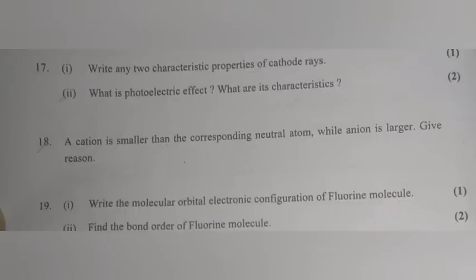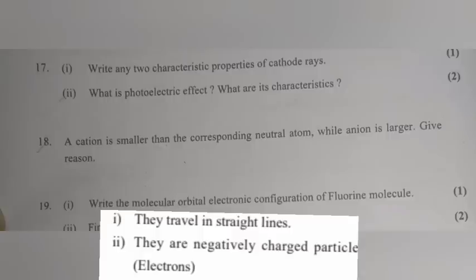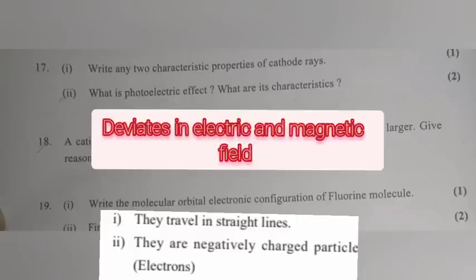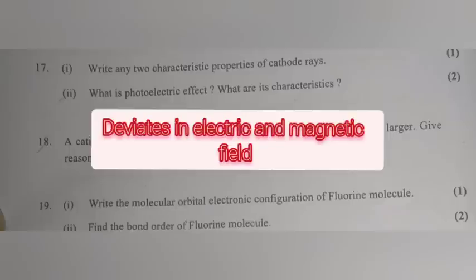Question 17.1: Write any two characteristics/properties of cathode rays. Answer: 1. They travel in straight lines. 2. They are negatively charged particles. 3. They deviate in electric and magnetic fields.